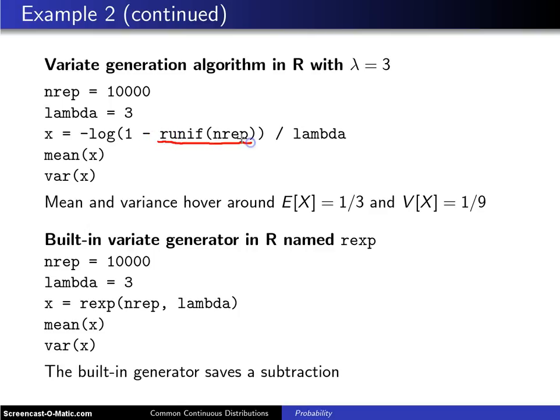And for u in this case, we put in 10,000 uniform 0,1s, which means we'll get 10,000 random variates x here. If you check the mean of x, you will get about 1 third, that is 1 over lambda, as you expect.